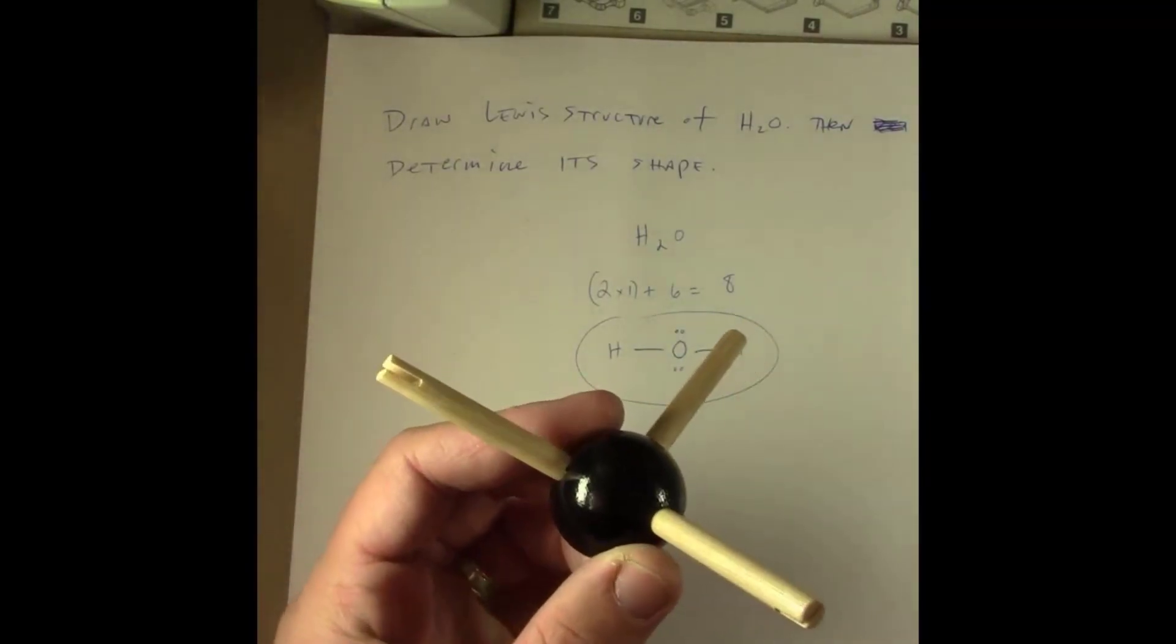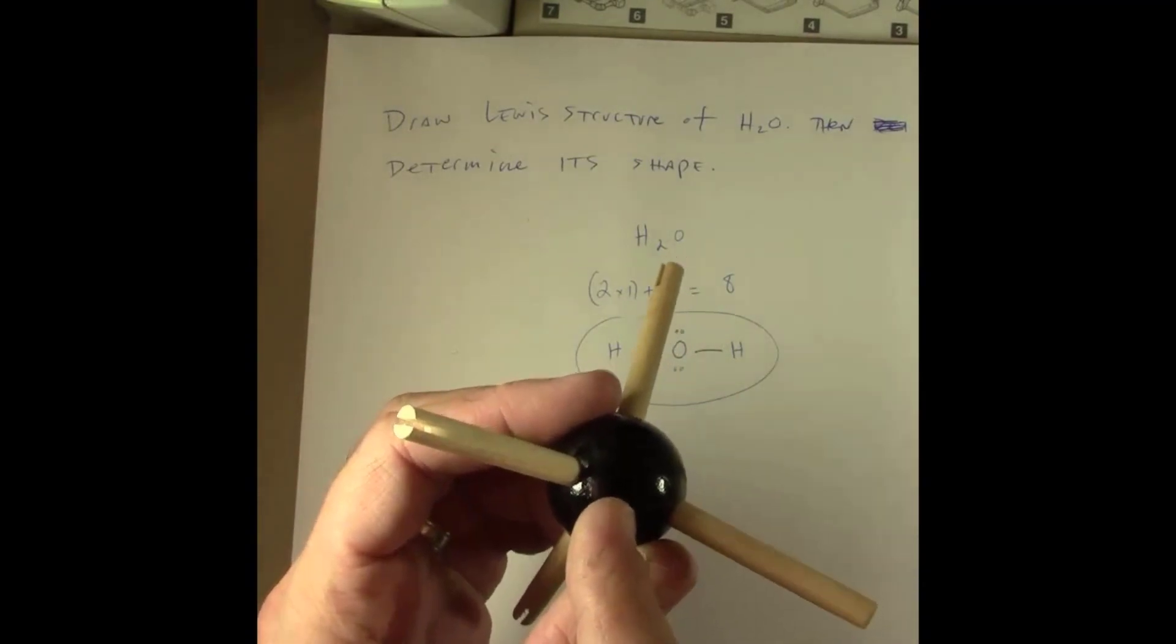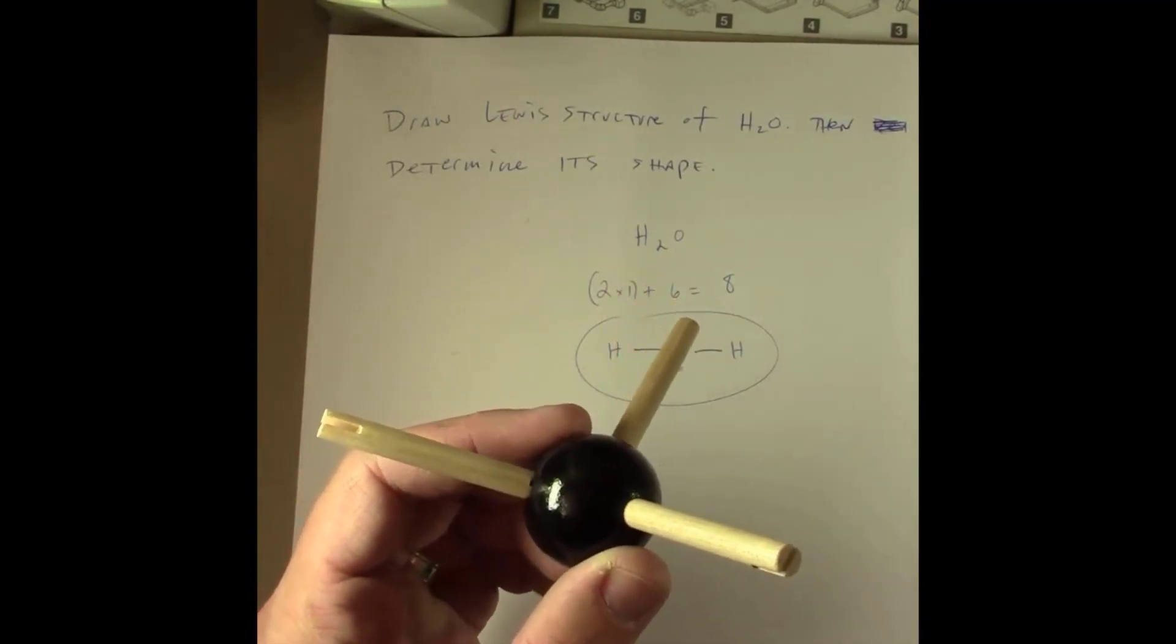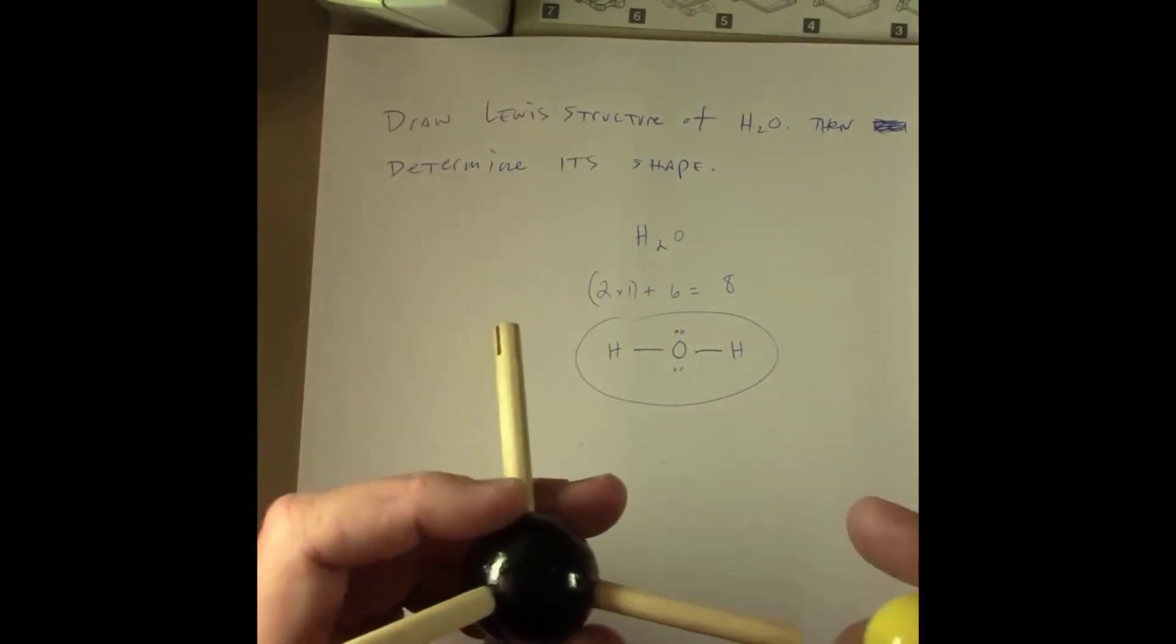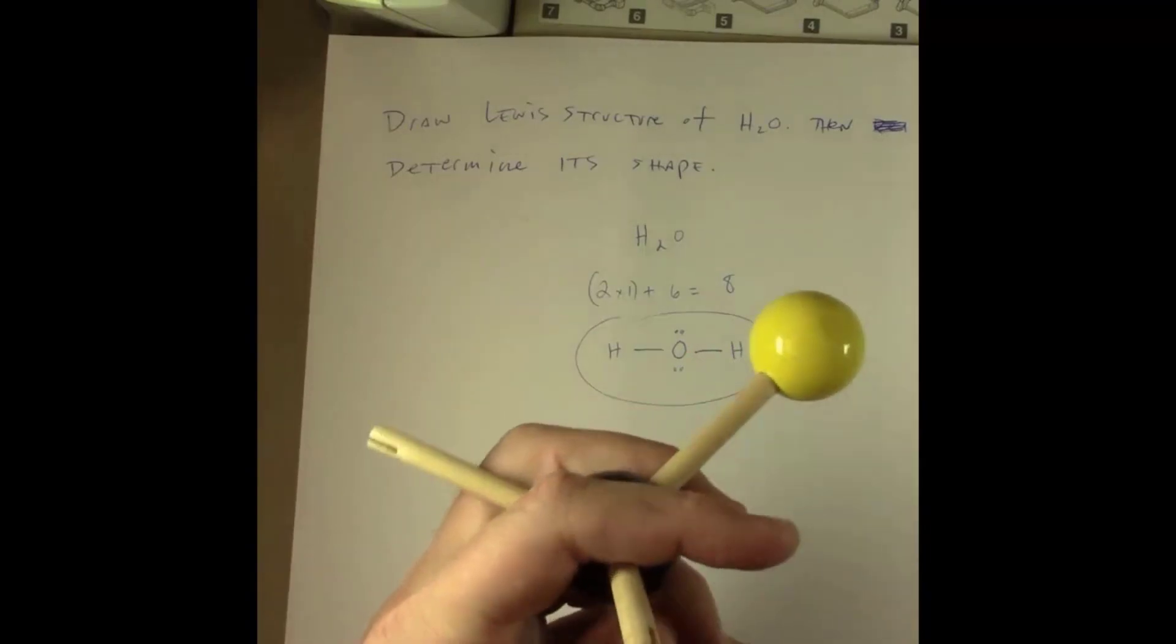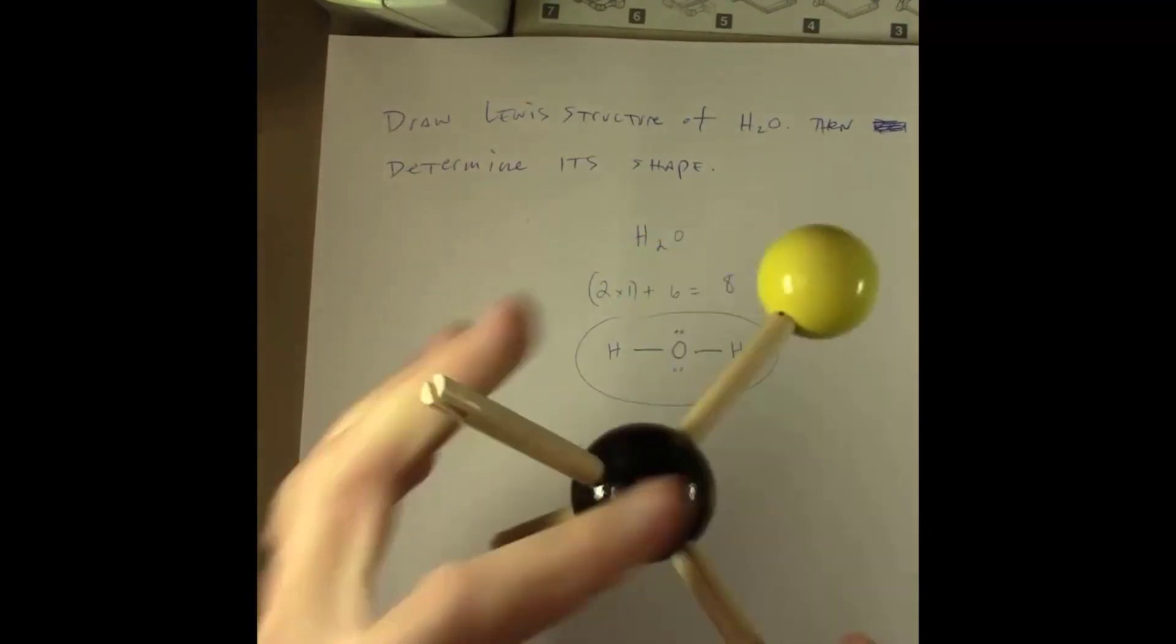So I'm going to use this same central atom that I used before, except this time this represents our oxygen atom, not a carbon atom. It's now going to be bonded to two different hydrogens, and it doesn't really matter where I put them. I'll go ahead and put one there and one right there.